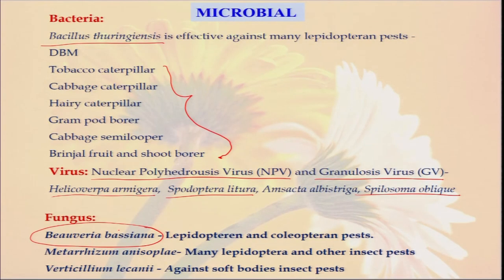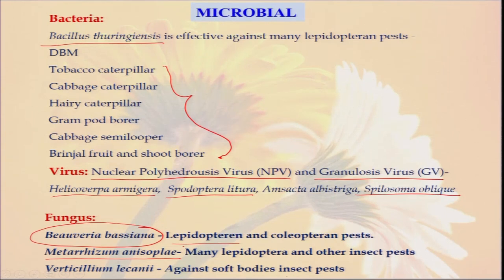We can also use different types of viruses like NPV and GV in our organic farming system. Similarly, there are lots of fungi available for microbial culture — we can culture them artificially in the lab, go for mass production, and distribute among farmers for applying in organic farming. One very important one is Beauveria bassiana. Beauveria bassiana is highly effective and attacks most Lepidopteran and Coleopteran pests. Similarly, Metarhizium anisopliae is also a new type of microbial agent, highly used against different types of pests, especially fall army worm in maize.